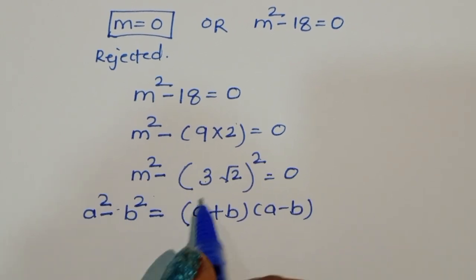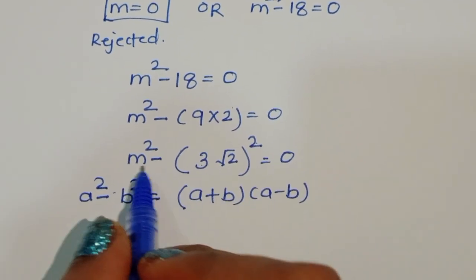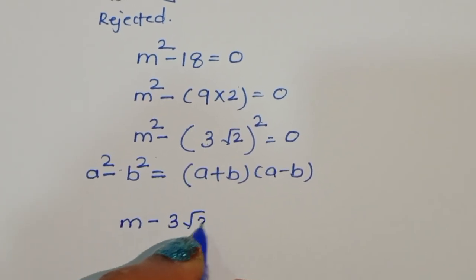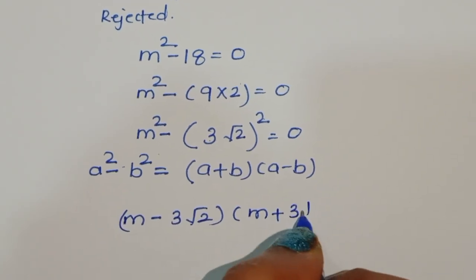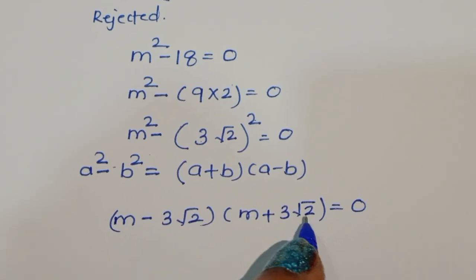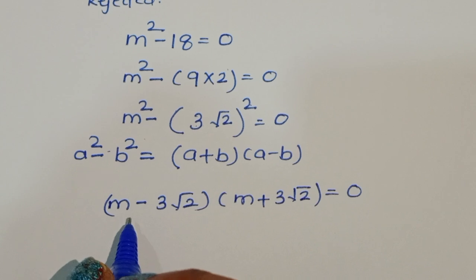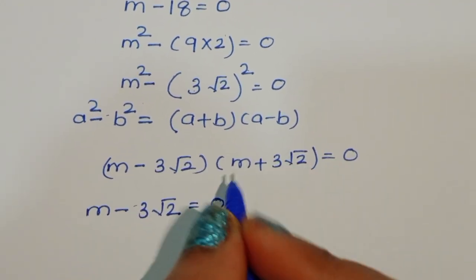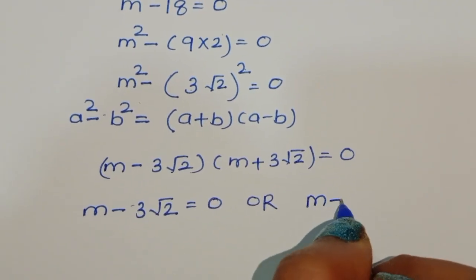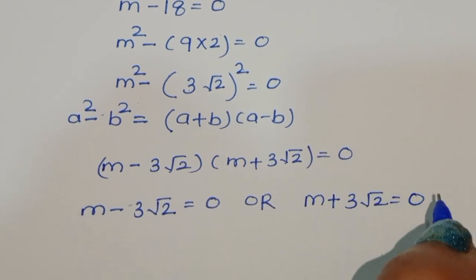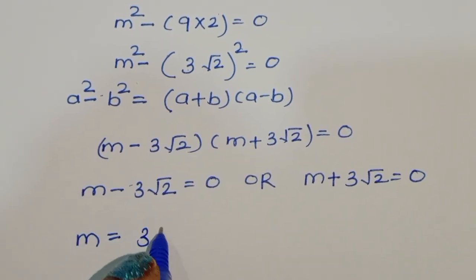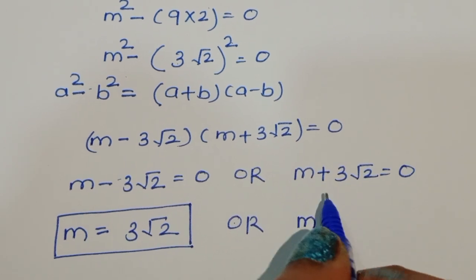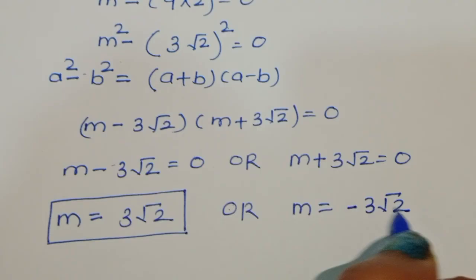We substitute into the formula. Converting to this form we get (m minus 3√2)(m plus 3√2) equals 0. So we get two equations: m minus 3√2 equals 0, giving m equals 3√2 (the positive value), or m plus 3√2 equals 0, giving m equals minus 3√2 (the negative value).